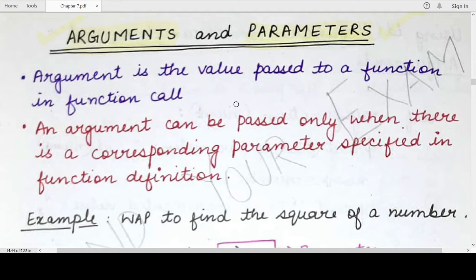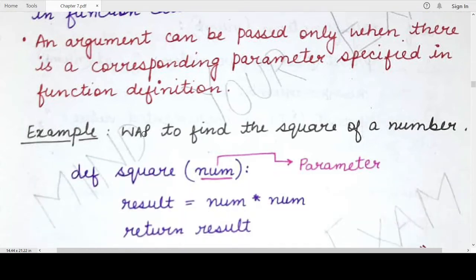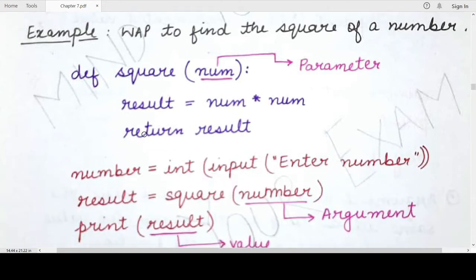Why do I say most probably? We will see some exceptions, which are default parameters or default values. But leaving that aside, if you have specified parameters during the definition of a function, you will have to specify arguments while calling that function. For each parameter, there will have to be a corresponding argument during the function call. Parameters and arguments are both values used inside the function body so that some operations can be performed on them.